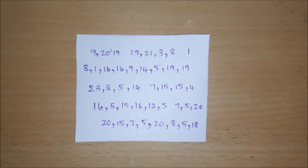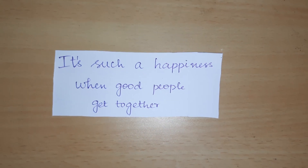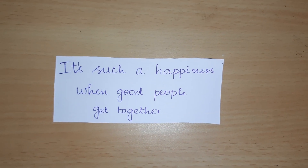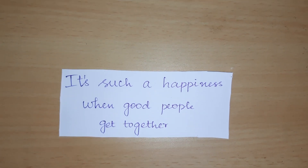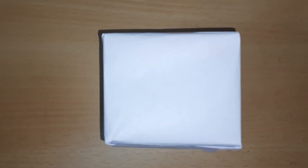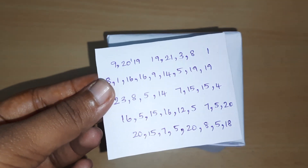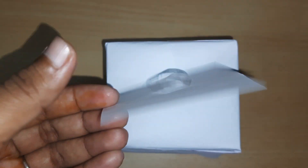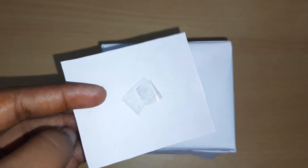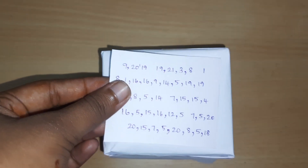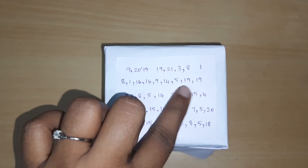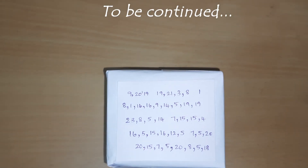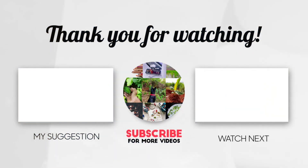For example, the word 'cat' can be written as 3, 1, 20. I am pasting this on the box I have created and you can paste it on the gift you have packed. We'll see you next time.